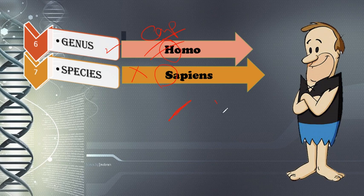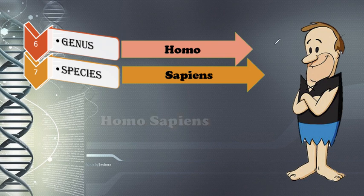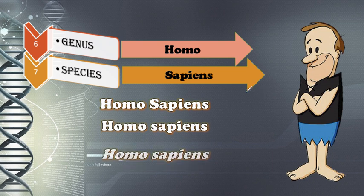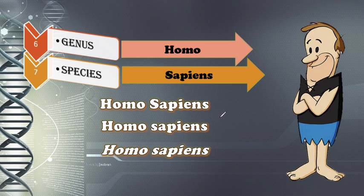Let me give you examples so you can identify the correct way of writing a scientific name. Here we have three versions of Homo sapiens. In the first, the genus starts with a capital letter — good — but the species also starts with a capital, so that's not correct. In the second, both capitalizations look right, but the letters are not italicized, so that's also incorrect.